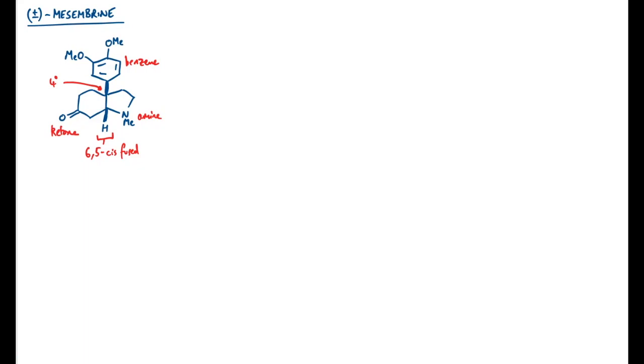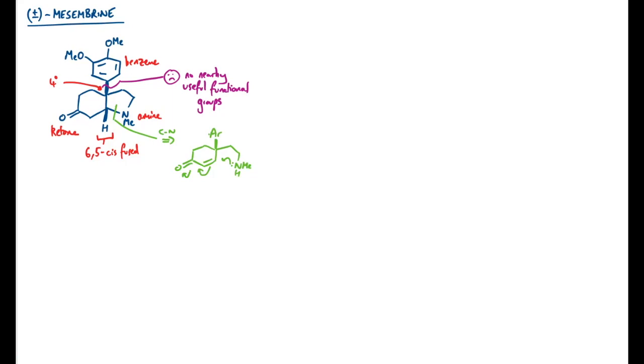Having a think about where disconnections could go: a disconnection approach normally tells us to go for branch points, particularly between rings — so perhaps this bond just by the benzene ring. I don't think this is a good way forward though; there are no nearby useful functional groups if we disconnect there. So perhaps we could think about cutting near one of the functional groups. A thing that jumps out is the C-N bond, because I could disconnect back to this amine. That would be nicely set up for an intramolecular Michael addition — it would even give the correct stereochemistry because the nucleophile is being held on the bottom face. But I'm not particularly satisfied with this one; it hasn't made good progress and hasn't really simplified the problem.